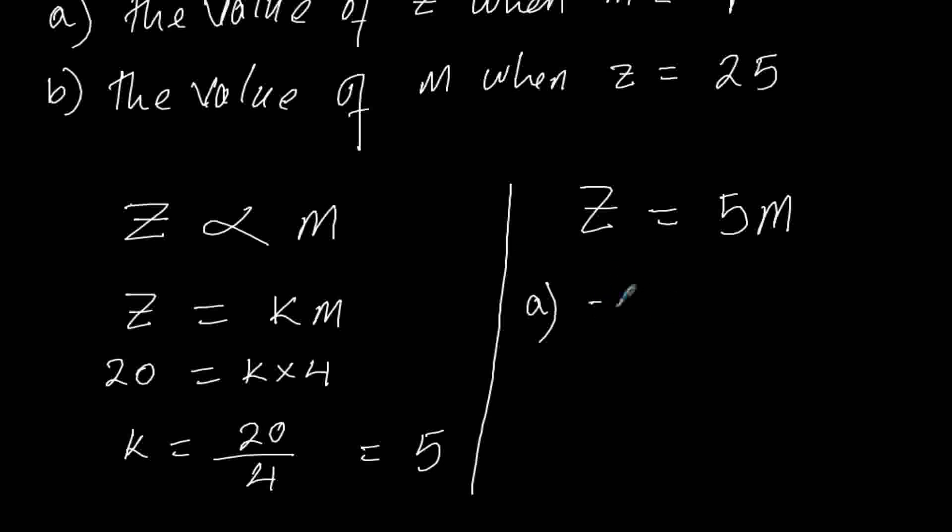So we are finding Z when M is 9. Where there is M, I will replace it with 9, so that will be 5 times 9, and 5 times 9 gives us 45. So Z equals 45 when M is 9.